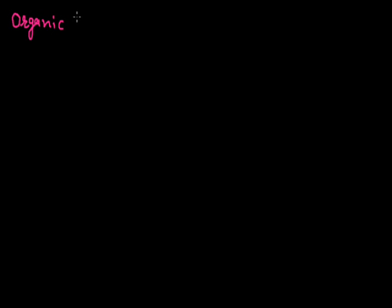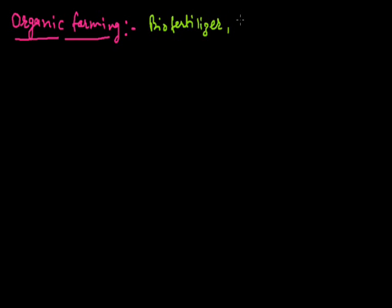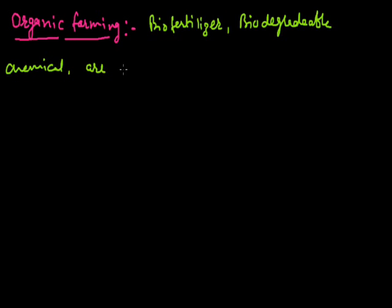Organic means the molecule which contains carbon — we call them organic. Farming means agriculture. The agriculture technique in which we use organic material or organic substances is called organic farming. It is the eco-friendly technique in which bio-fertilizers and biodegradable chemicals are used. These chemicals are eco-friendly.